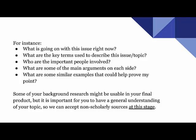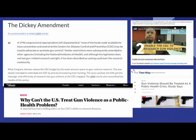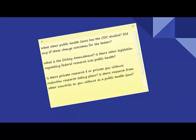That means I might be willing to look at web searches and news stories. Those aren't scholarly, but they could give me a solid understanding of what's going on right now that will help me do better searching when I actually go into the databases. So I did some Googling and found out I needed to know a whole bunch of things — like what are the other public health issues that CDC has studied, and did any of those change outcomes for the better? What is the Dickey Amendment? What other legislation regulates federal research into public health? Is there private research money or private gun violence reduction research going on? Is there research from other countries? I knew I needed to know a lot more.